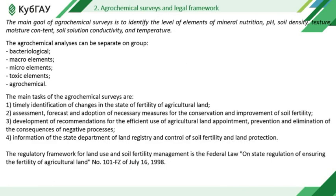The next point is agrochemical surveys and legal framework. The main goal of agrochemical surveys is to identify the level of elements of mineral nutrition, pH, soil density, texture, moisture content, soil solution, conductivity and temperature. The agrochemical analysis can be separated into groups: bacteriological, macro elements, micro elements, toxic elements, and agrochemical.